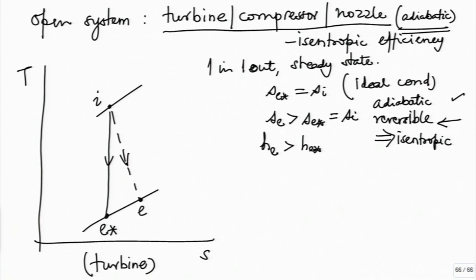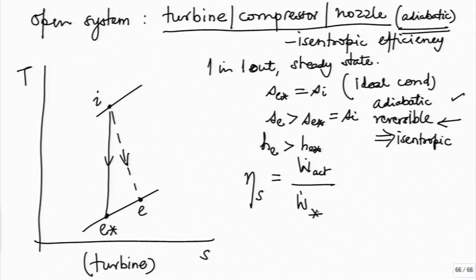In the case of a gas, even the temperature at exit e will be higher than temperature at e*. We define the isentropic efficiency as the actual power output divided by the ideal power output, given by W-dot-star. The isentropic efficiency represents the non-isentropic, irreversible behaviour of a turbine, compressor, or nozzle. If the device is adiabatic and reversible — that means isentropic — the isentropic efficiency would be exactly 100 percent or 1.